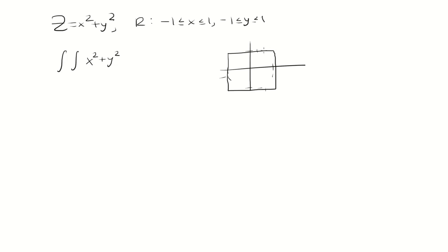So this top line, we have an equation y equals 1. This bottom line is y equals negative 1. And this line is x equals negative 1, x equals 1.